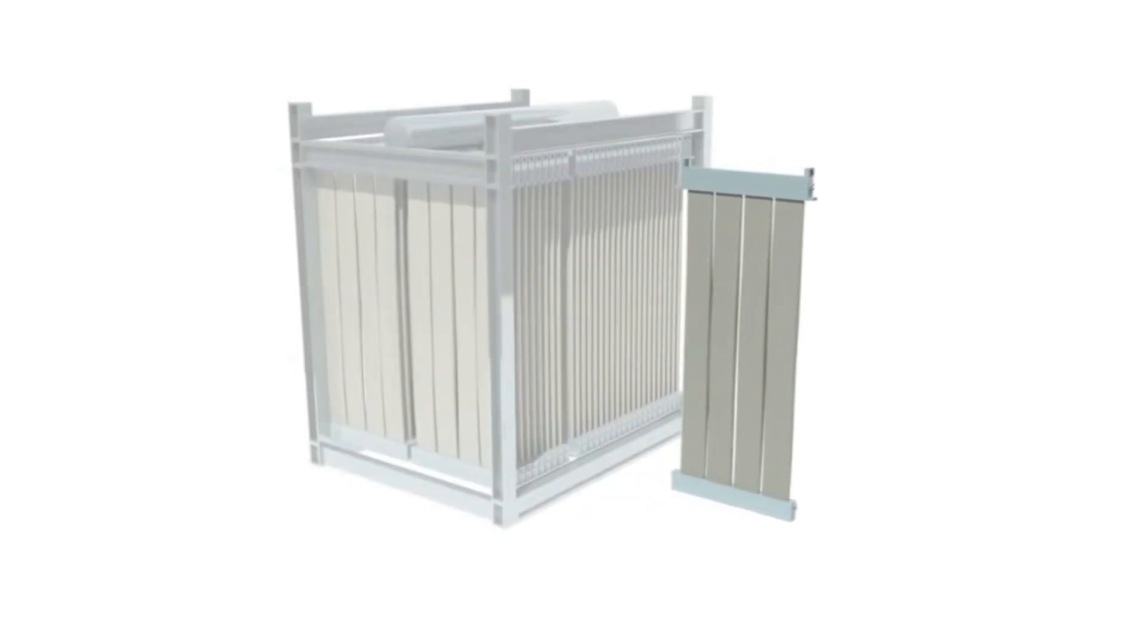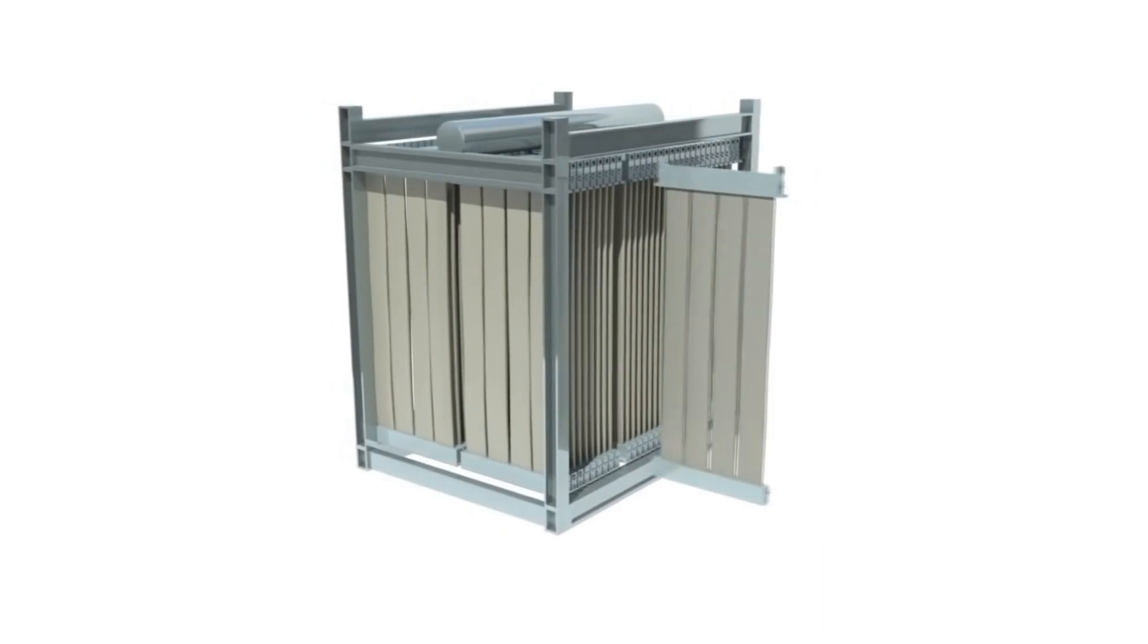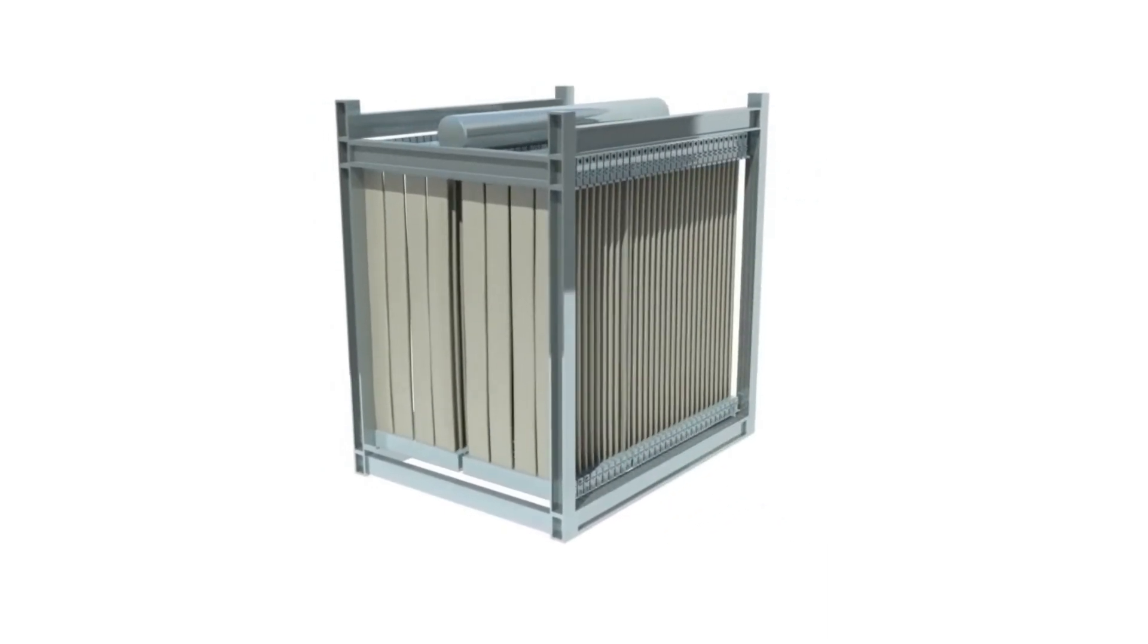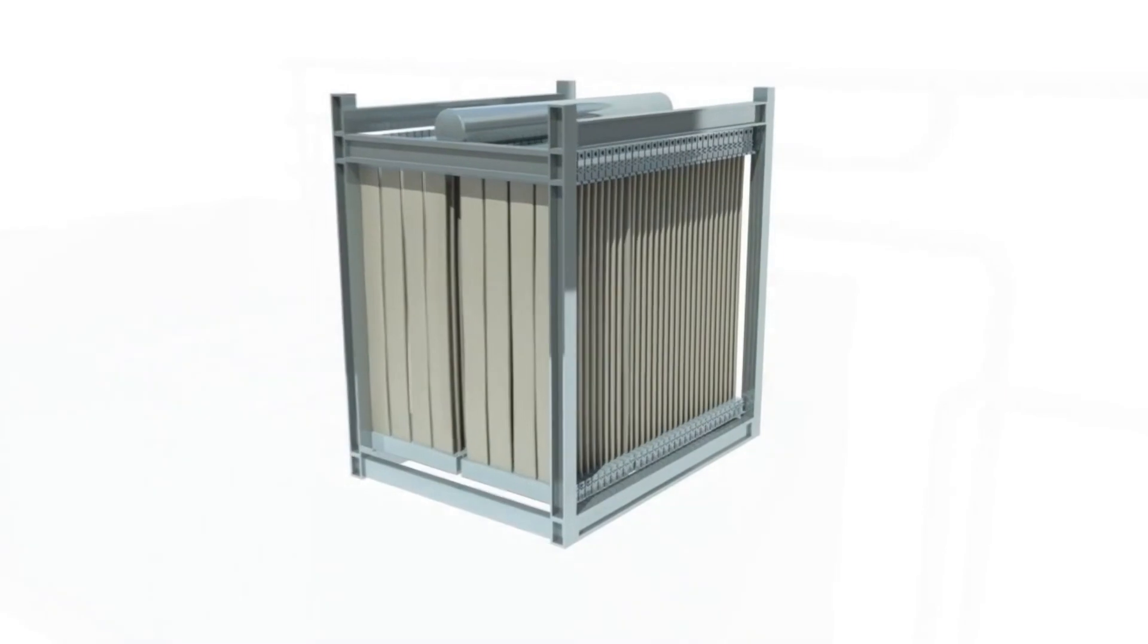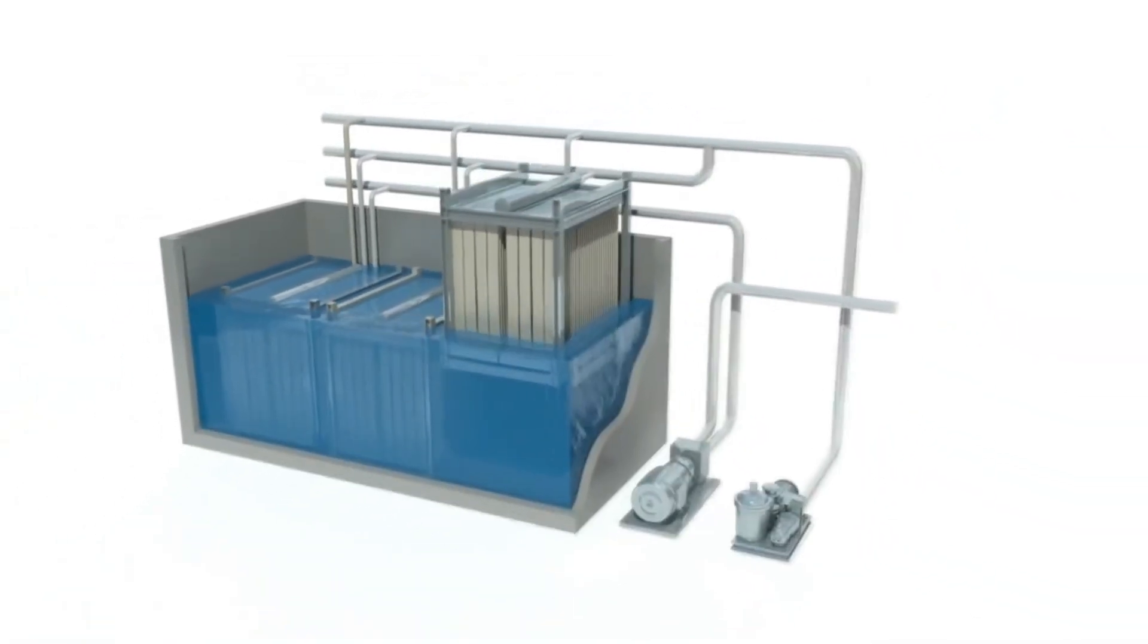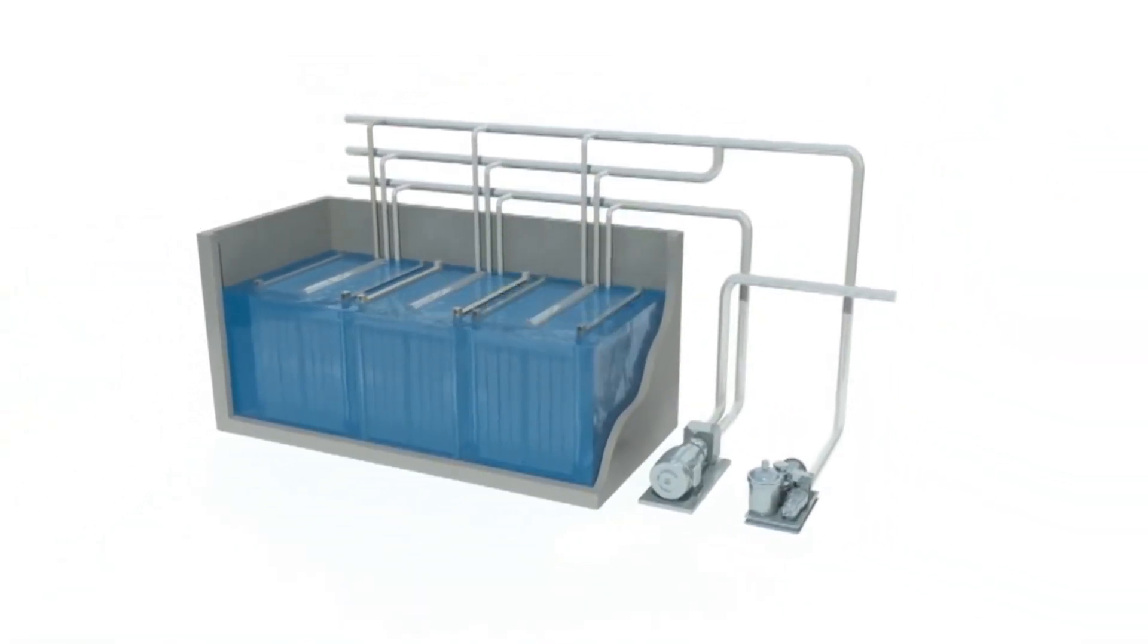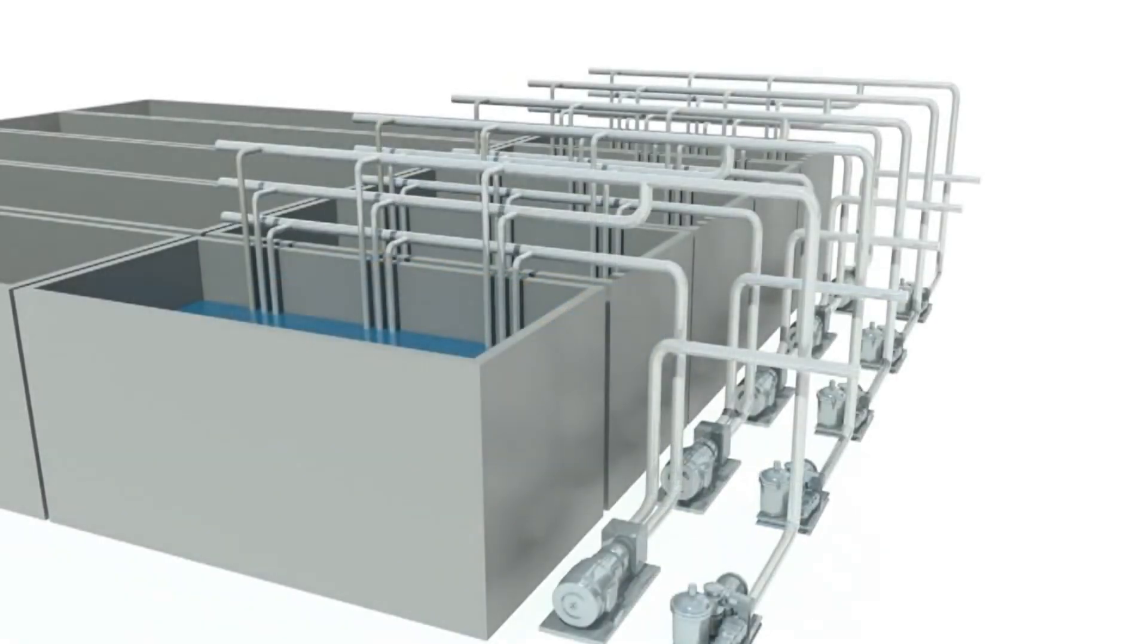Cassettes are formed by simply inserting Zweed modules into guide slots and locking them into place. Cassettes are immersed directly into the filtration basin to form a production train. Processed trains are simply multiplied to meet the required treatment plant capacity.